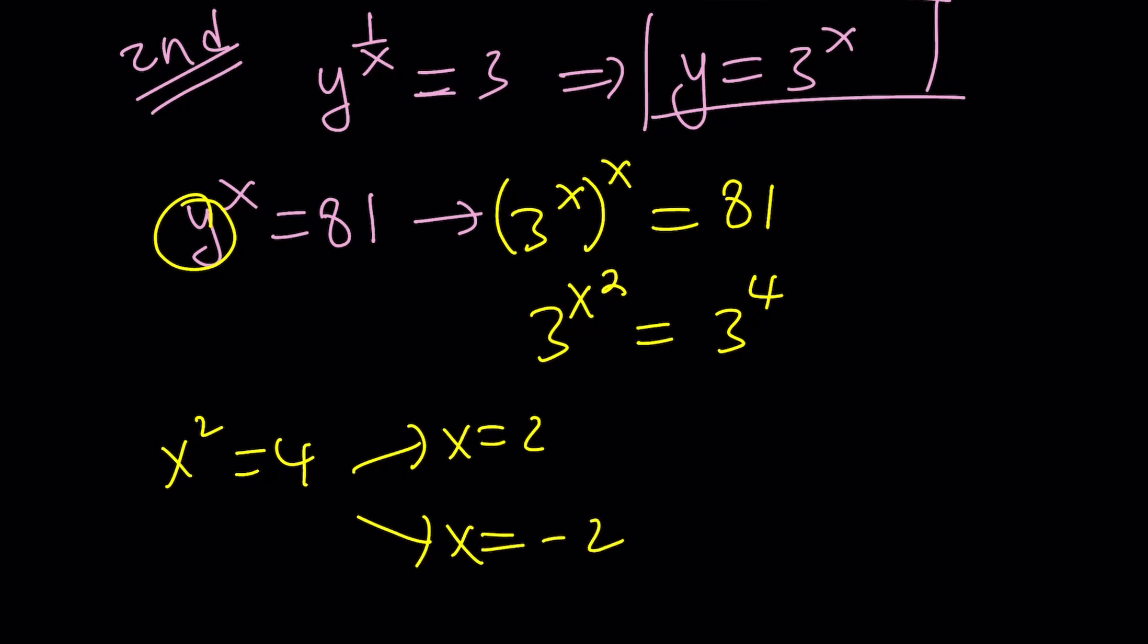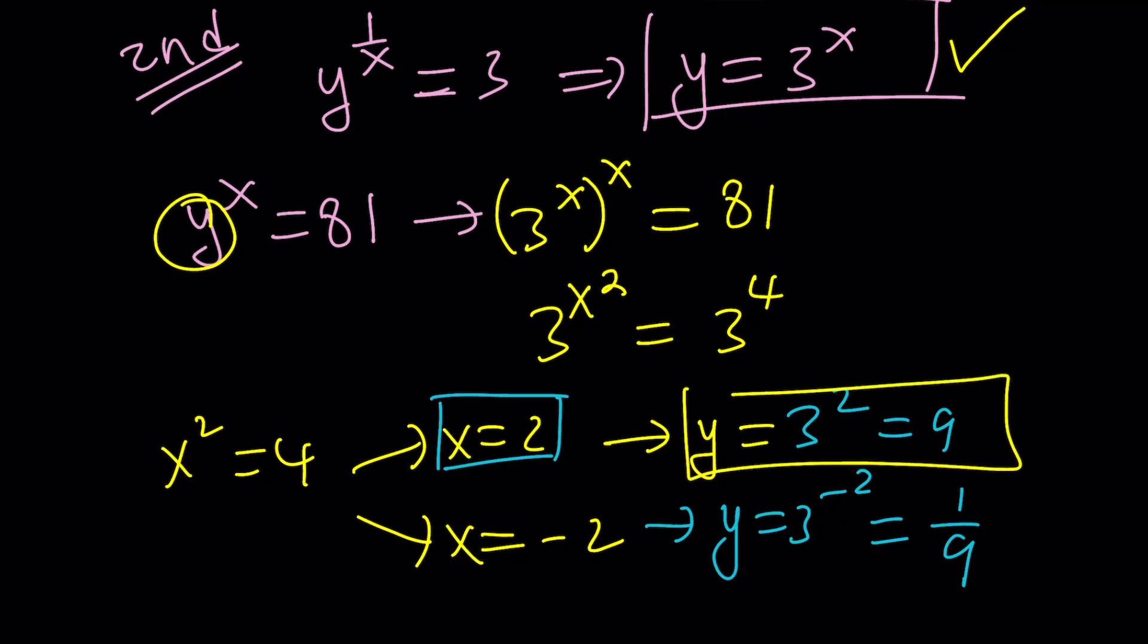But here's the nice thing about it. If you focus on y equals 3 to the x, from here you're only going to get the positive solution. That's why y is always positive. So y is going to be, if x is equal to 2, then y is going to be 3 to the power of 2, because y is 3 to the x. 3 to the 2, which is 9, or 3 to the negative 2, which is 1 over 9. Same thing. We got the same solutions, of course.